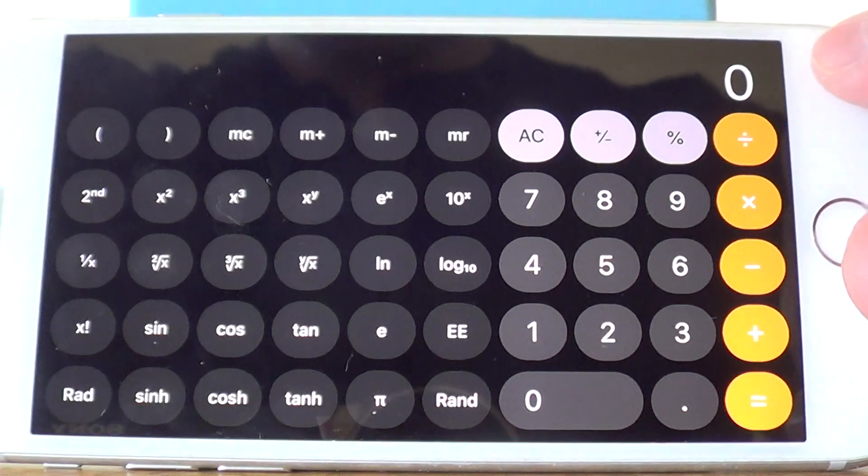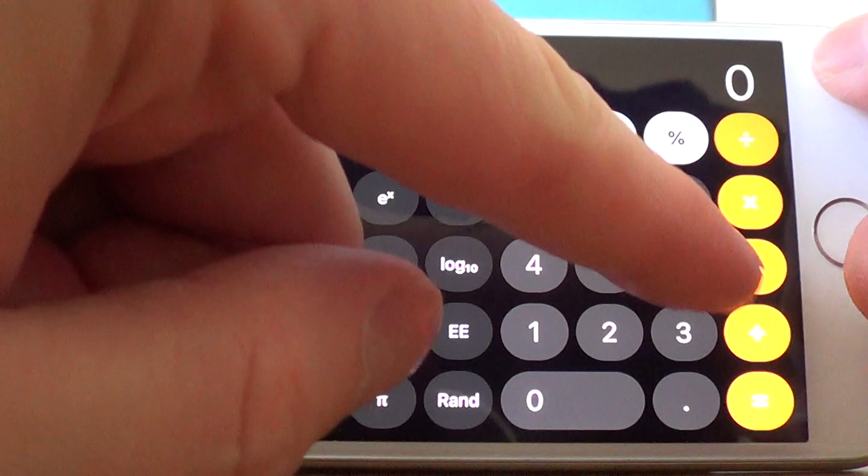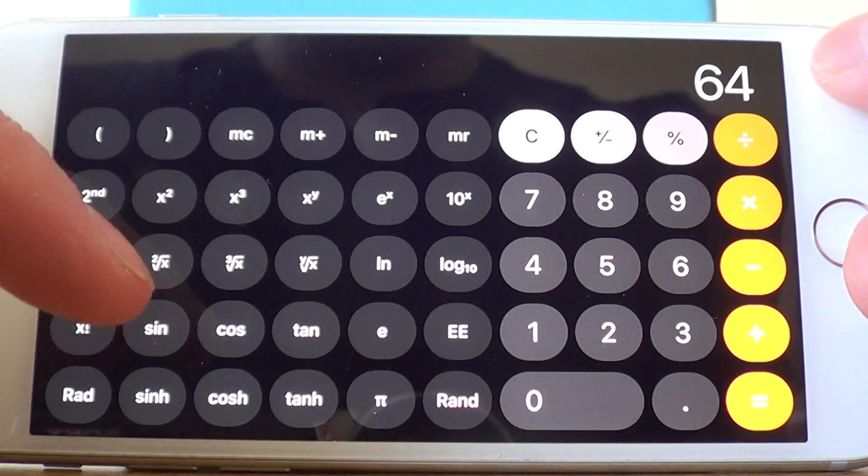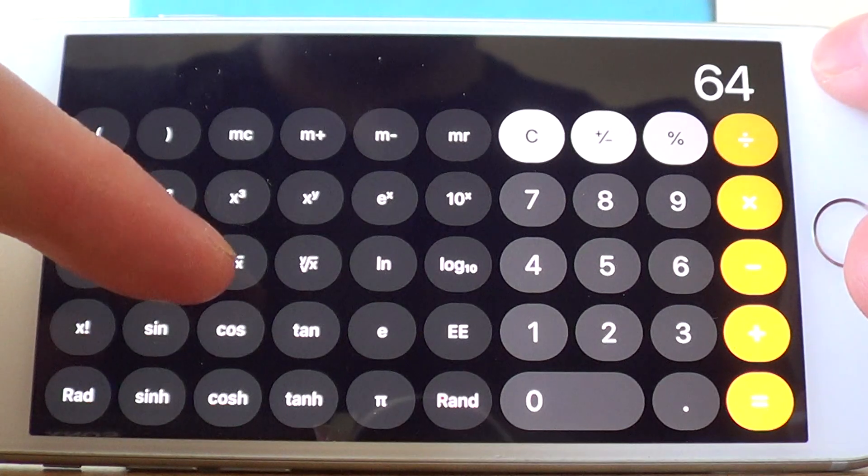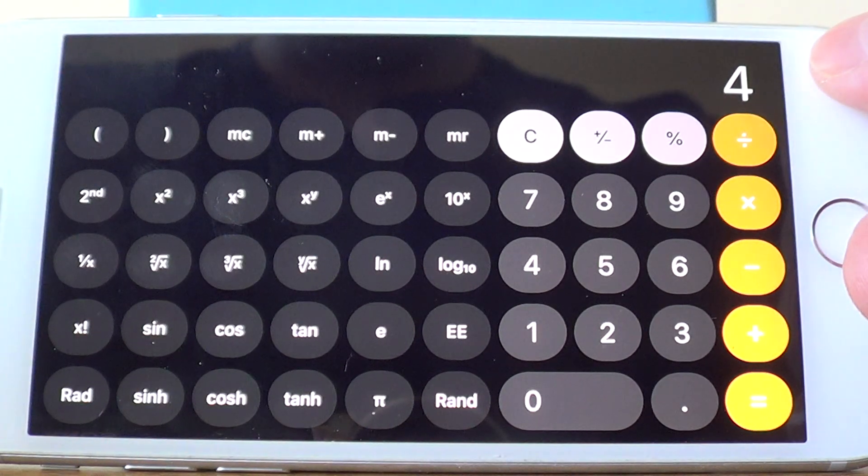Let's have a look then at working out the cube root of 64. So if we type in 64, and then the cube root key is on the third row down, this one here, and we get the answer 4.